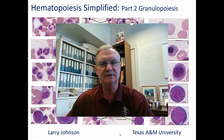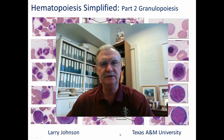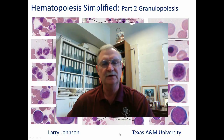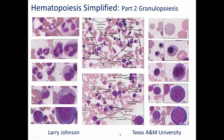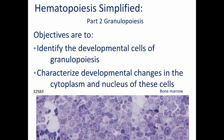Today we want to talk about hematopoiesis simplified, Part 2: Granulopoiesis. We start with the most advanced cell type that appears in blood and step back to the most immature form seen in the bone marrow. Our objectives are to identify the developmental steps of granulopoiesis and to characterize the developmental changes in the cytoplasm and nucleus of these cells.